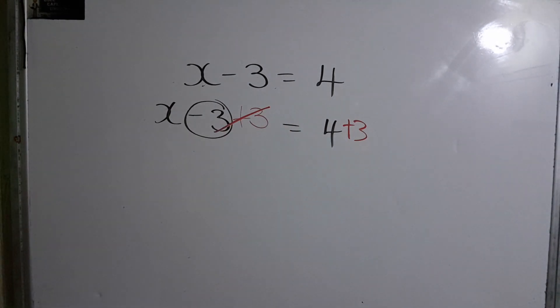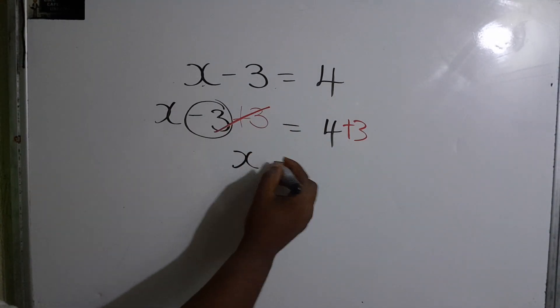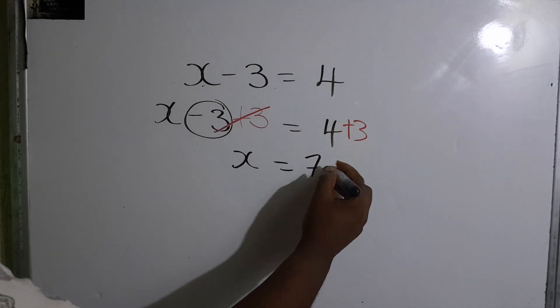This will give us 0. So therefore, x is equal to 4 plus 3 which is 7.